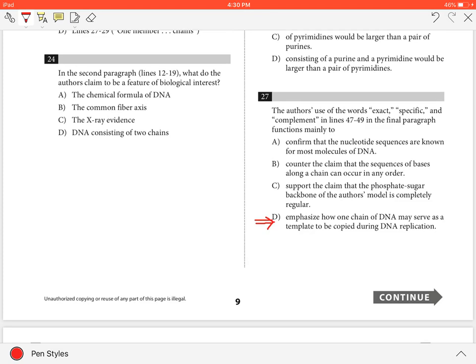Choice A is incorrect because the passage does not suggest that most nucleotide sequences are known. Choice B is incorrect because these lines are not discussing the random nature of the base sequence along one chain of DNA. And Choice C is incorrect because the authors are describing the bases attached only to the sugar, not to the sugar phosphate backbone.